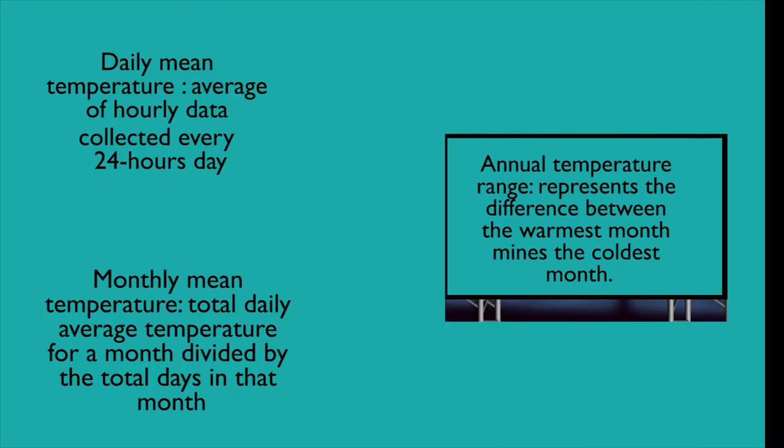Temperature always refers to numbers. You can measure them in 24 hours, representing the daily mean temperature. If you sum all monthly daily temperatures and divide by the number of days, you have the monthly mean and finally the annual temperature. The annual temperature range represents the difference between the warmest month minus the coldest month. Keep that in mind because you are going to use it.